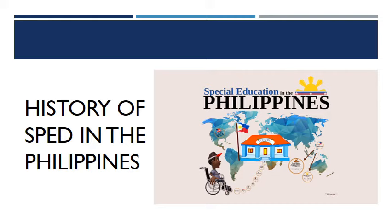Now let us proceed to the history of SPED in the Philippines. SPED in the Philippines started in the 1900s during the American colonization. The growth of special education has been given relatively good support by the government, non-government organizations, and stakeholders. One positive development is the implementation of Republic Act 7277, the Magna Carta for Disabled Persons — an act providing for the rehabilitation, self-development, and self-reliance of disabled persons and their integration into mainstream society. In support of this, the Department of Education directed all school divisions to establish special education centers nationwide.